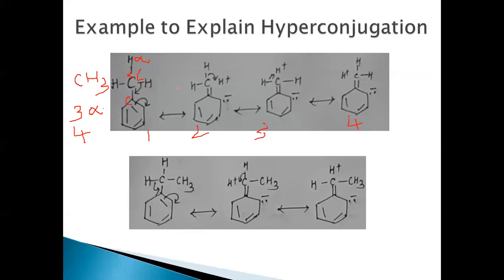In each of the four canonical structures, a different hydrogen participates. In one structure, a hydrogen releases electrons into the system — as a result, the ring carbon gets a negative charge and that hydrogen gets a positive charge. In the third structure, another hydrogen participates and gets a positive charge, and similarly for the fourth structure. So four canonical structures are possible for methylbenzene.